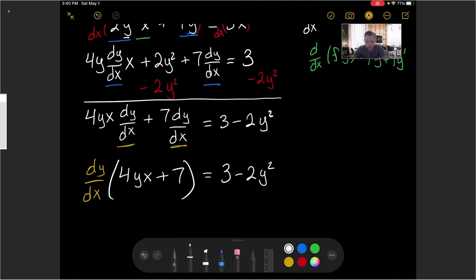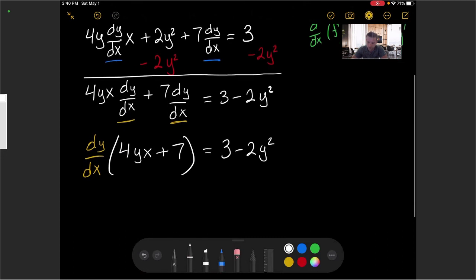The last thing we can do here is just divide both sides by my 4yx + 7. And so when these cancel, I'll be left with the dy/dx.